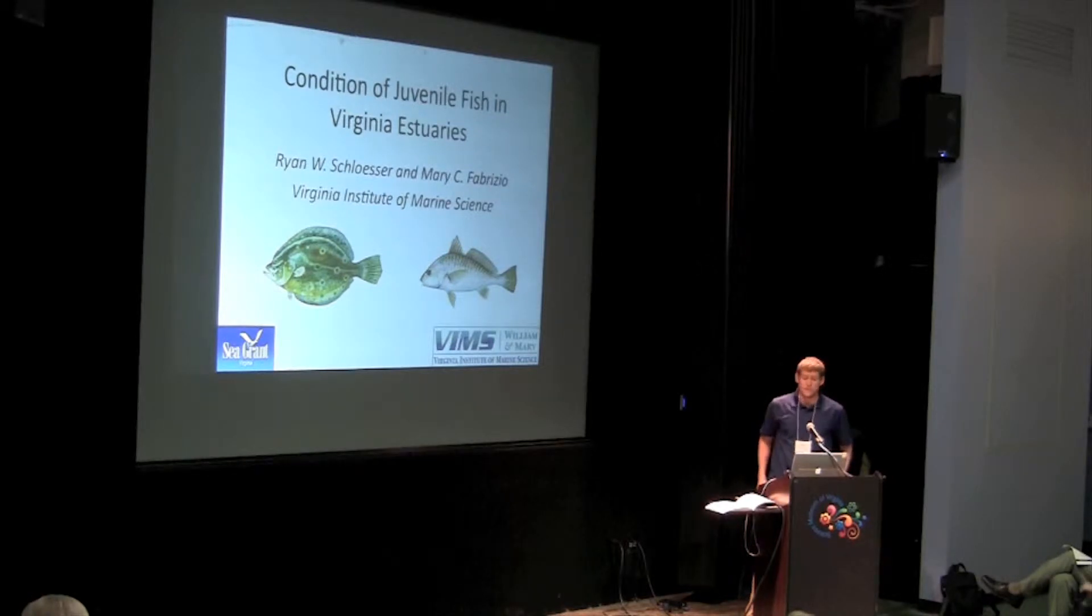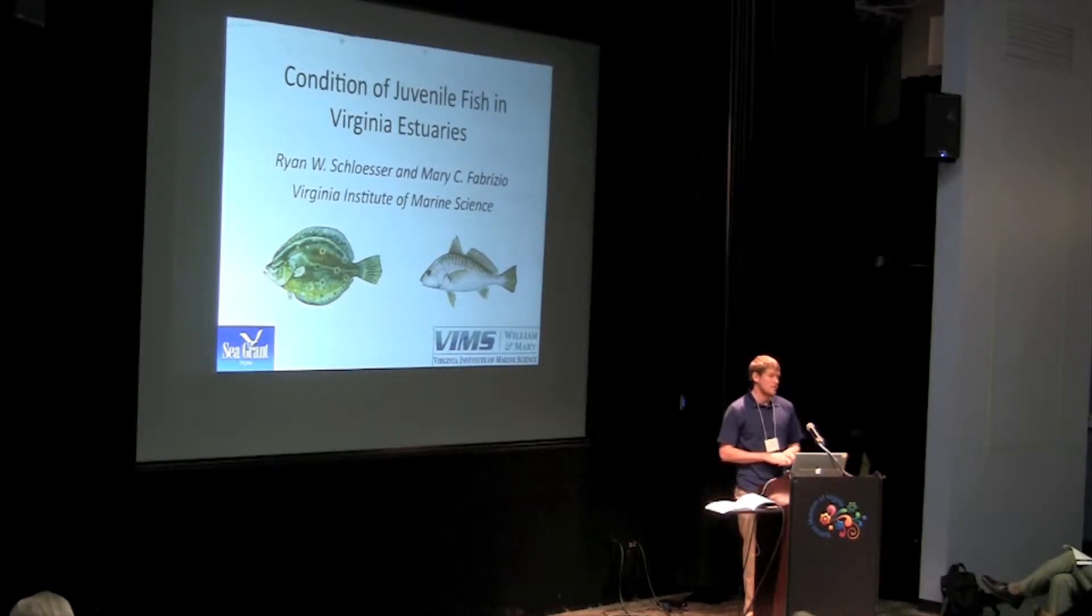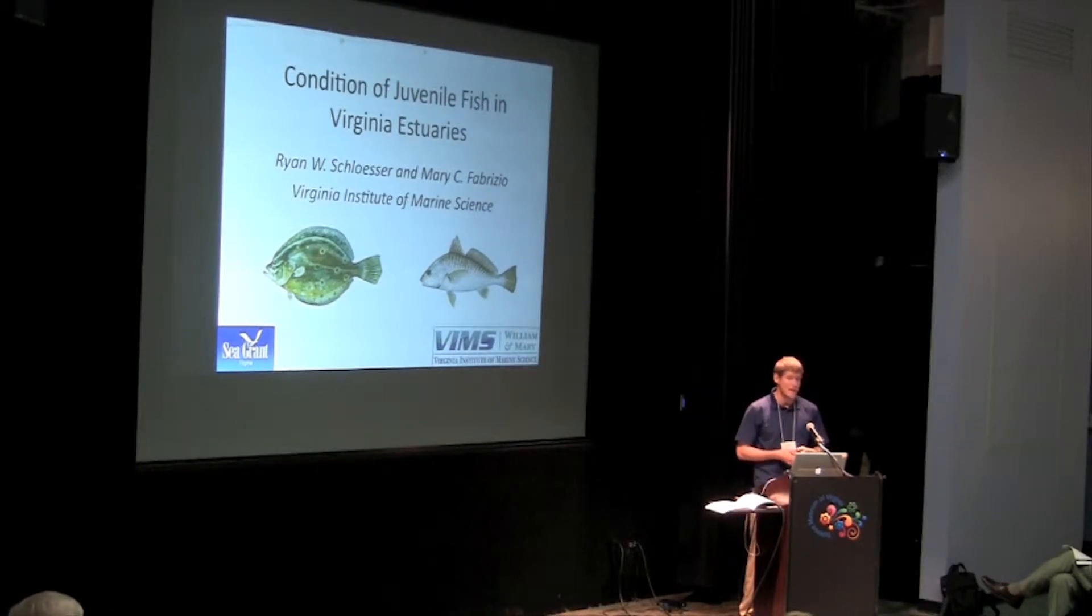The focus of my research is on the condition of juvenile fish in Virginia estuaries for three species: the summer flounder, striped bass, and Atlantic croaker. Today, I'll only be focusing on flounder and croaker, so if you're interested in striped bass, please talk to me later today.